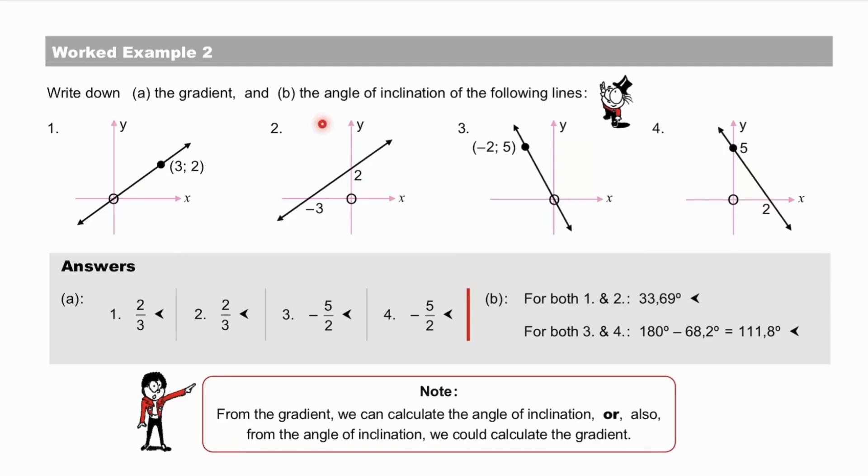Graph 1 and graph 2 have the same positive gradient, and therefore, the same acute angle of inclination. Graphs 3 and 4 have the same negative gradient, minus 5 over 2, and therefore, the same obtuse angle of inclination. And, note that, from the gradient, we can calculate the angle of inclination, or, also, from the angle of inclination, we can calculate the gradient. Again, reversible processes.